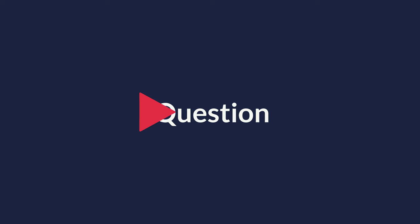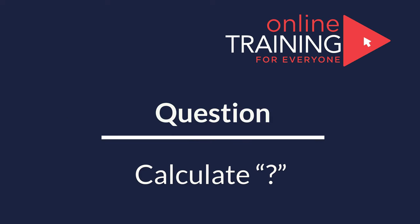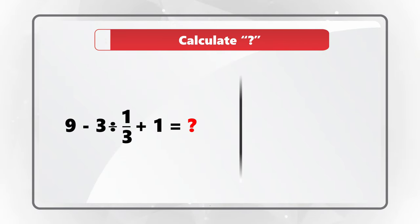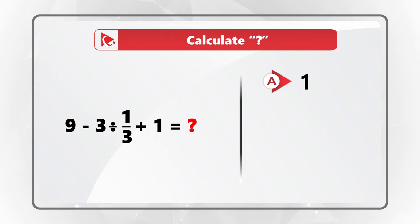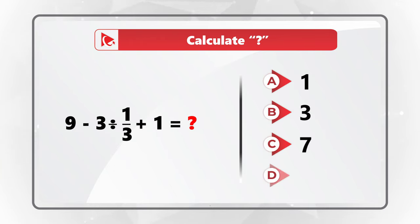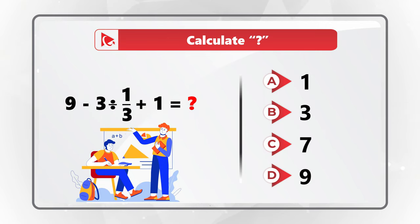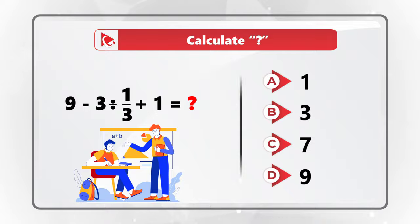Here's an amazing question to test your math skills. You're presented with a simple expression and you need to calculate the value of this expression. You have four different choices: Choice A is 1, Choice B is 3, Choice C is 7, and Choice D is 9. Give yourself a little bit of time to see if you can calculate the solution.